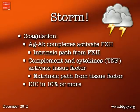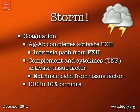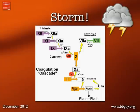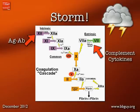As far as coagulation goes: antigen-antibody complexes from incompatible red cell transfusion activate Factor XII, starting the intrinsic coagulation pathway. Complement and cytokines like TNF-alpha activate tissue factor, starting the extrinsic pathway. Both pathways stimulate coagulation, but because coagulation is complex, they also stimulate the fibrinolytic pathways. The result: at least 10% of patients with acute hemolytic reactions go into disseminated intravascular coagulation (DIC).